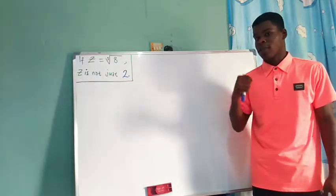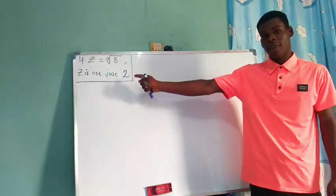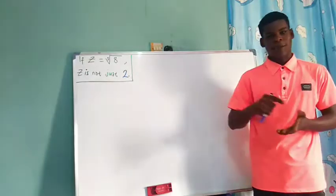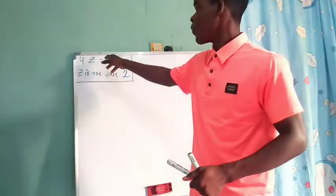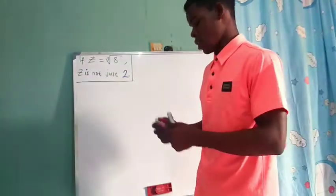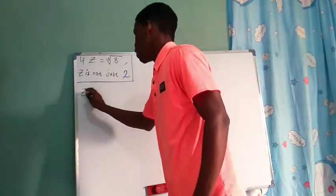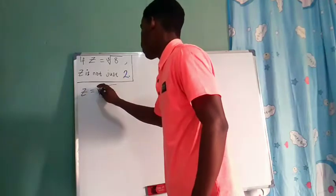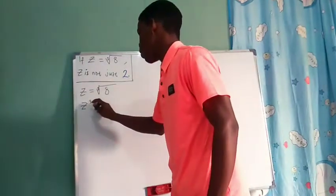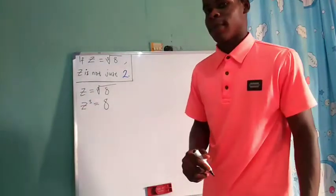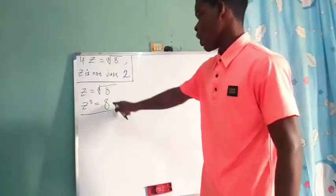We can substitute for z and that will give three values. We know 2 is always one value, because it is the only real value. The other two are something else — let's find them. So z is the cube root of 8, which means z cubed equals 8, and we are going to go ahead and solve this.